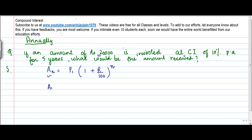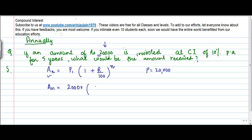I need to calculate this amount, so I write it as: Amount equals principal. The principal is the initial amount which is invested, so my principal is equal to 20,000. This is the initial amount that was invested by the investor, so I write 20,000 here.